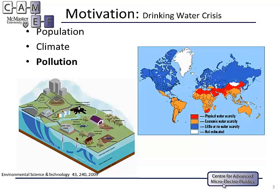There are three main factors that cause this drinking water crisis: population growth, climate change, and the most important one — pollution from daily human behavior like industrial discharge, urban agricultural runoff, and urban wastewater.